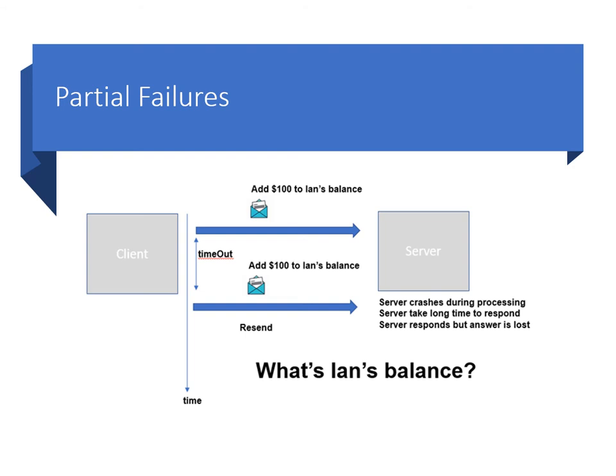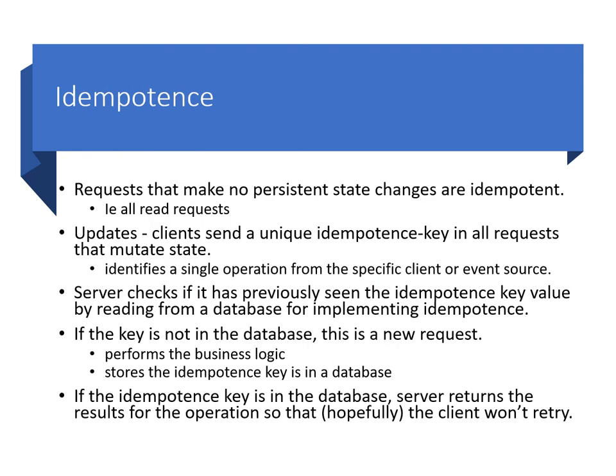The property we're trying to achieve here is known as idempotence. Idempotent operations can be applied multiple times without changing the result beyond the initial application. This means the client can retry the request as many times as it likes, but the account will only ever be increased by one hundred dollars. Requests that make no persistent state changes are naturally idempotent — all read requests, for example, are inherently safe. Updates, however, are a different matter. The system needs a mechanism so that duplicate client requests can be detected by the server and do not cause state changes beyond the initial application. In API terms, these endpoints cause mutation of server state and must be idempotent.